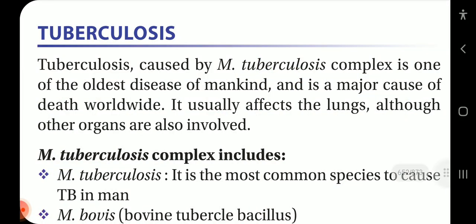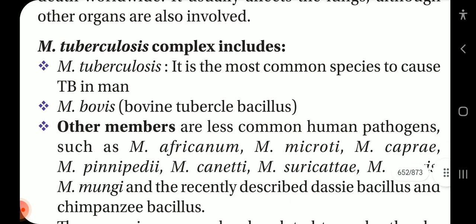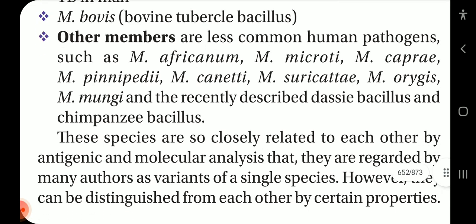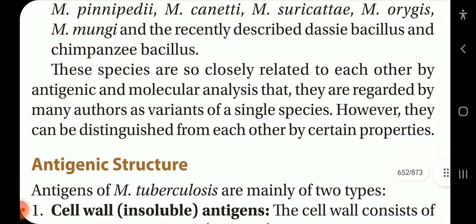Tuberculosis, caused by Mycobacterium tuberculosis complex, is one of the oldest diseases of mankind and a major cause of death worldwide. It usually affects the lungs, although other organs are also involved. The M. tuberculosis complex includes M. tuberculosis — the most common species to cause TB in man — M. bovis (bovine tubercle bacillus), and other less common human pathogens such as M. africanum, M. microti, M. caprae, M. pinnipedii, M. canettii, M. suricattae, M. orygis, M. mungi, and the recently described Dassie bacillus and Chimpanzee bacillus. These species are so closely related by antigenic and molecular analysis that many authors regard them as variants of a single species, though they can be distinguished by certain properties.